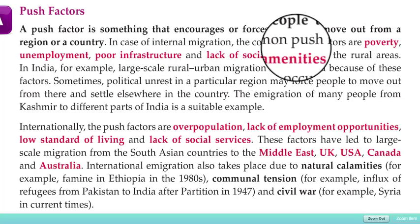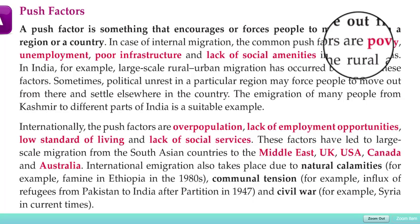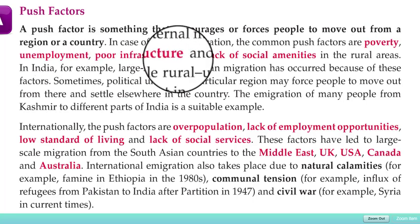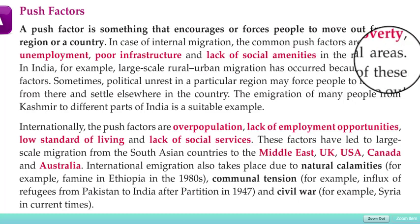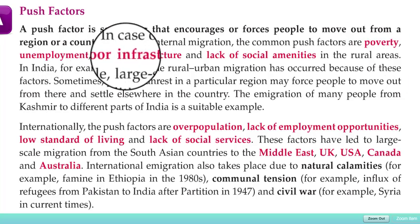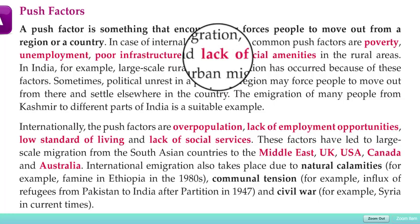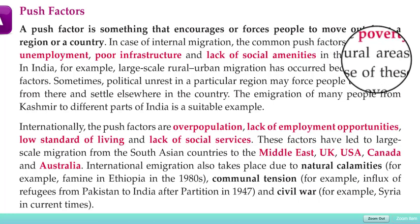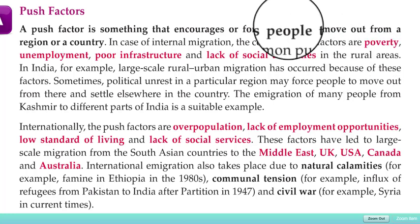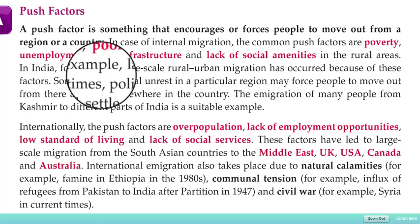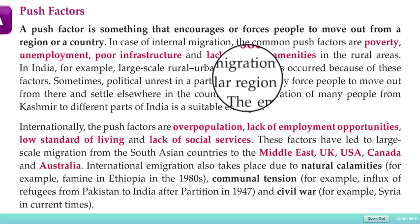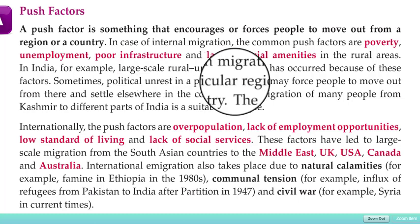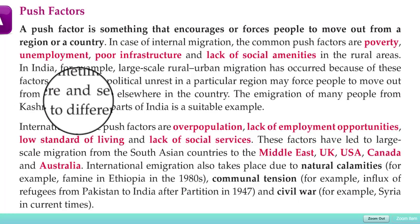In the case of internal migration, common push factors include poverty, unemployment, poor infrastructure, and lack of social amenities in rural areas. Because of these conditions, people try to shift from rural places to cities. In India, for example, large-scale rural-urban migration has occurred because of these push factors.